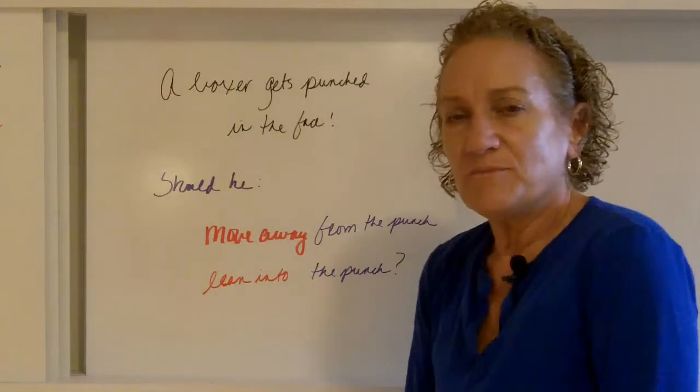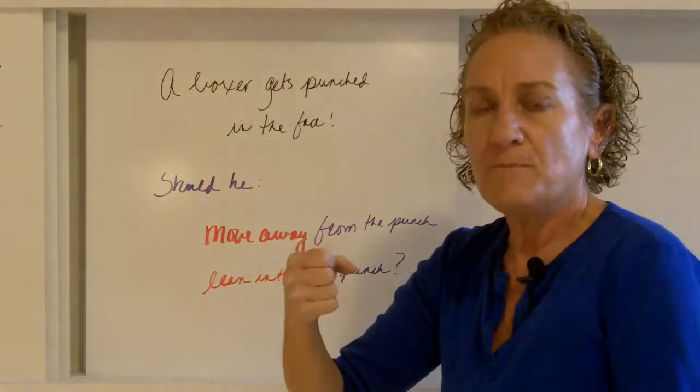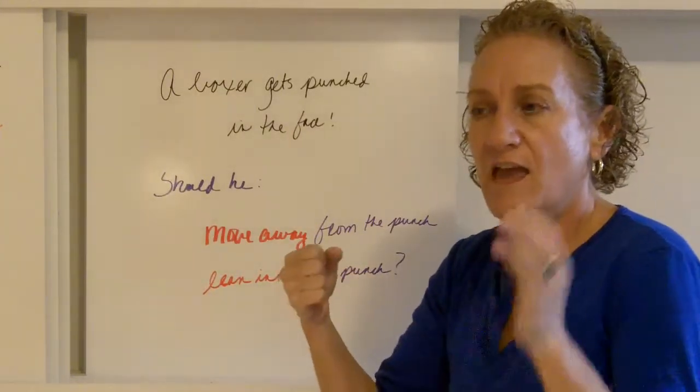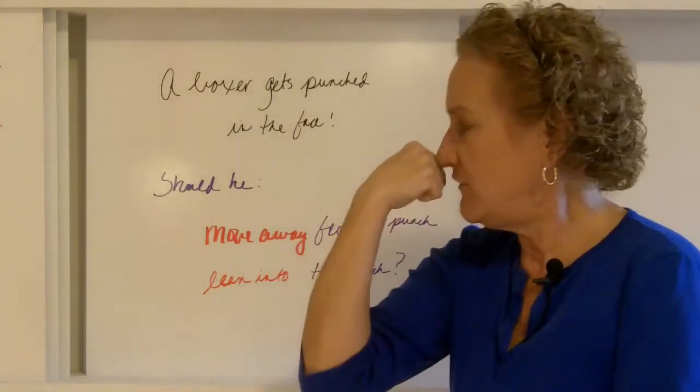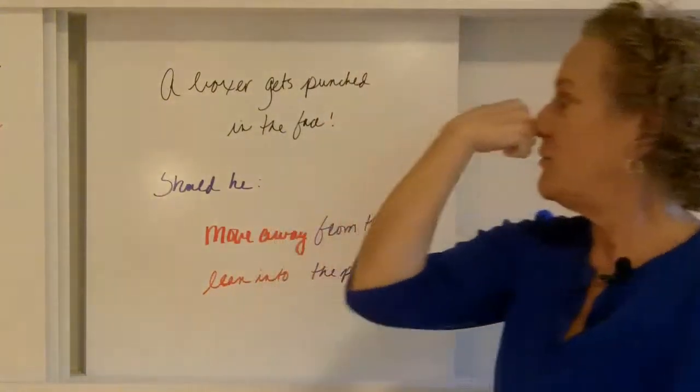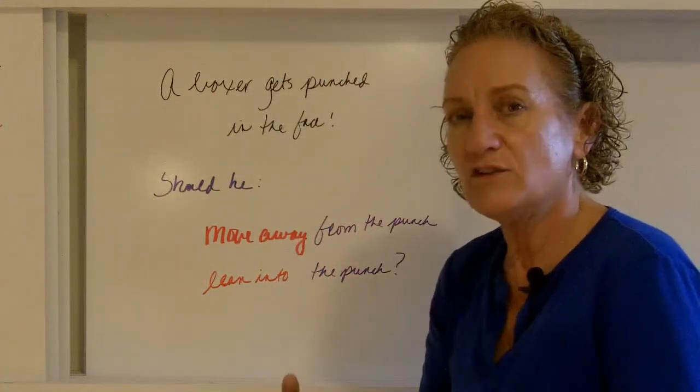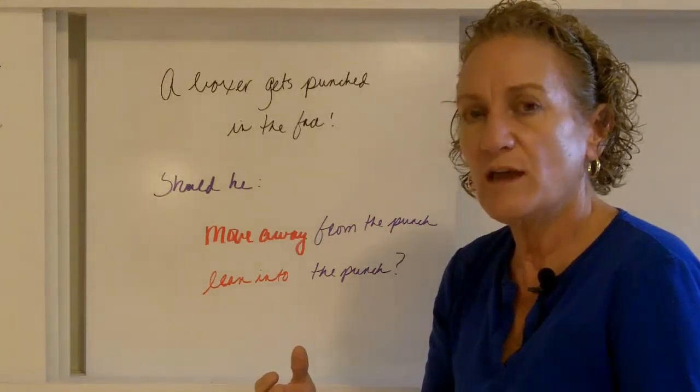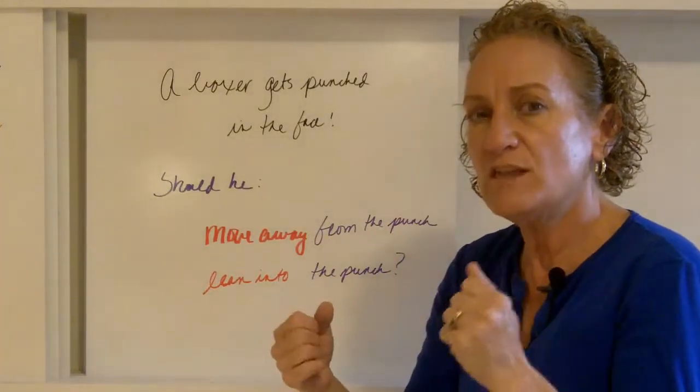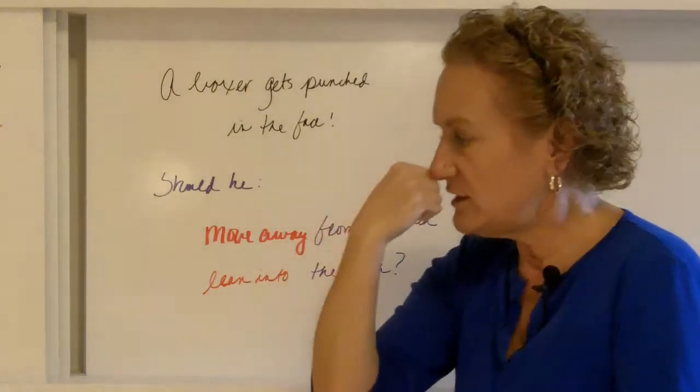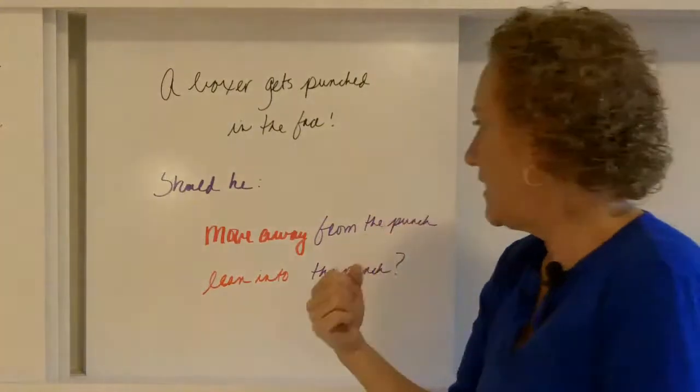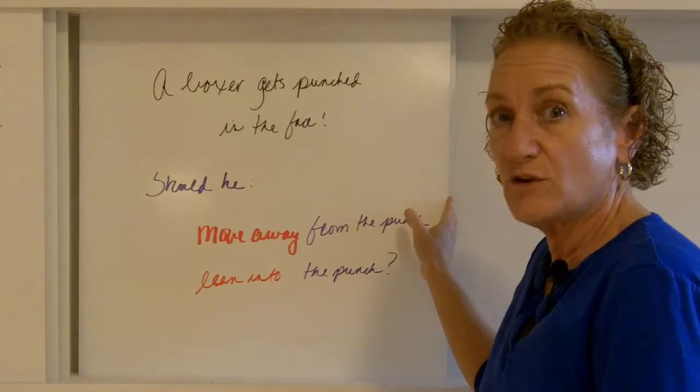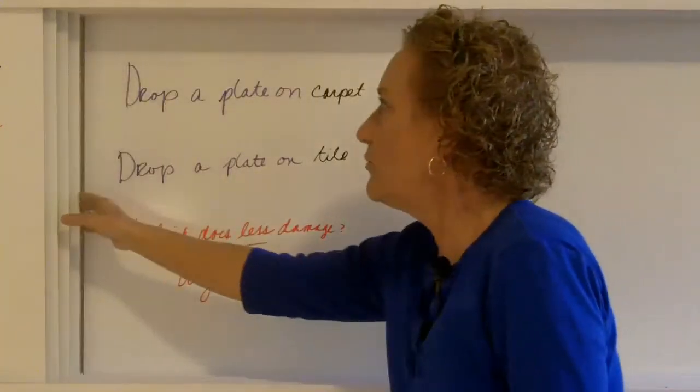How about a boxer? A boxer is going to get punched into the face. Now I've heard lean into it and go with the flow. So what do you think? If the boxer is going to get punched in the face, should he lean into the punch or should he go with the punch, move away from the punch? What do you think he should do? Remember, what you want to do is increase the time. So if you increase the time, moving away from the punch will actually increase the time and lower the force and hopefully lower the injury.